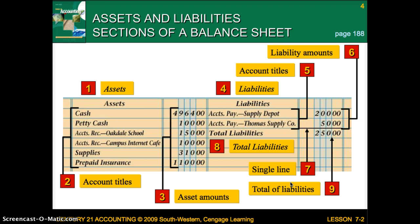The assets and liabilities sections of a balance sheet look a little different than your income statement. You'll have two different sides: your assets on the left and your liabilities on the right. Write Assets on the first line in the middle, with all your asset account titles and amounts below. Then you'll have your liabilities, account titles, liability amounts, and total liabilities.